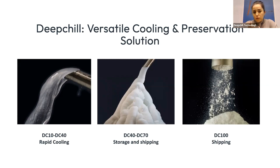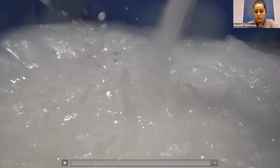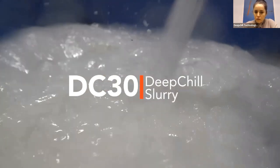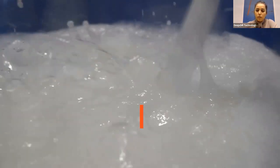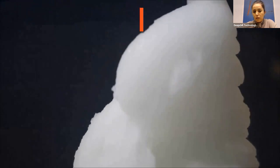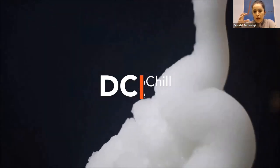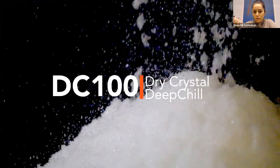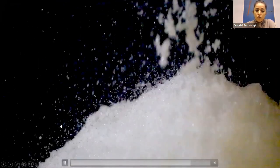Depending on the percentage of crystals to water in the solution, you see a different form of Deep Chill. Deep Chill 10 to 40 means 10 to 40 percent crystals in water — a more liquid form that pumps as easy as water. Deep Chill 40 to 70 has between 40 to 70 percent ice fraction, giving it a thick ice-cream-like form. At 100 percent it's pure crystals, just like snow.